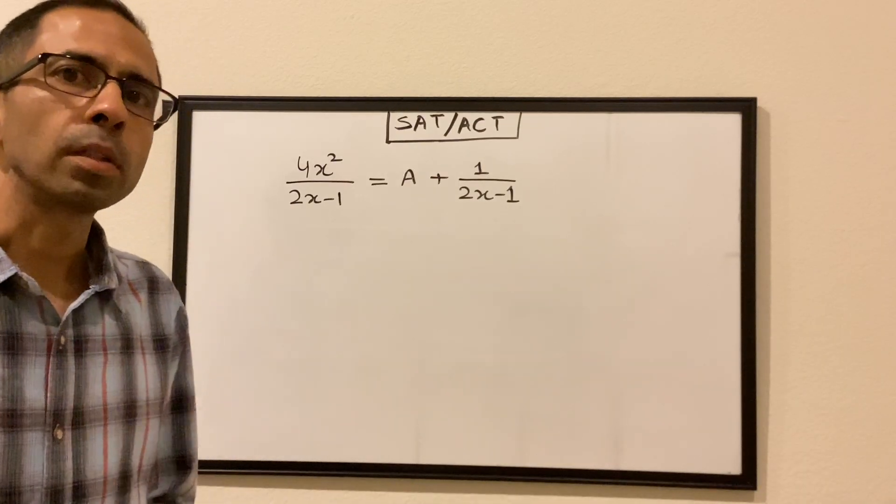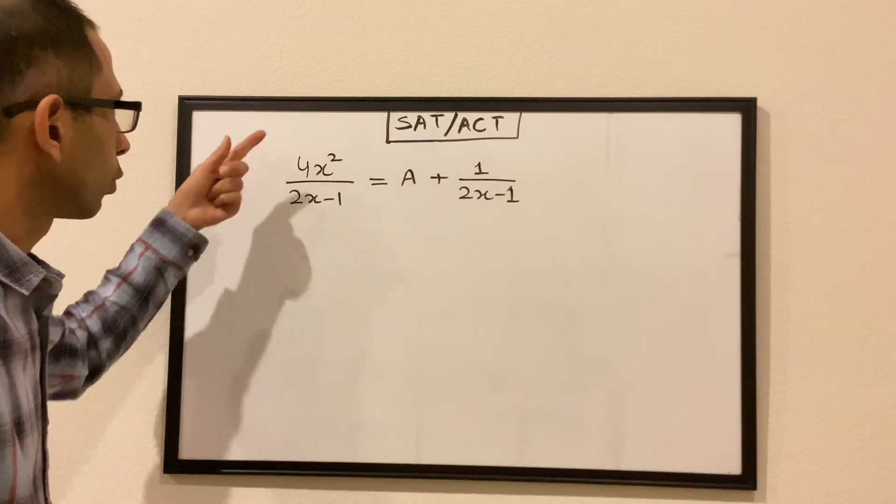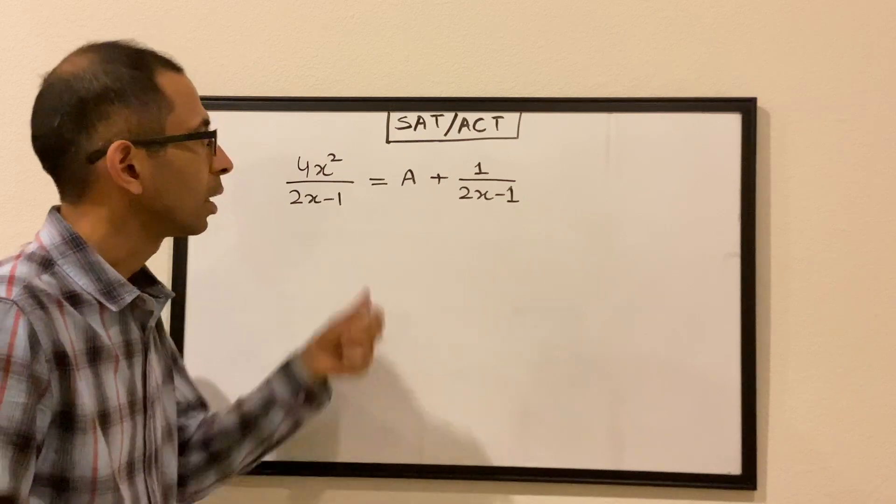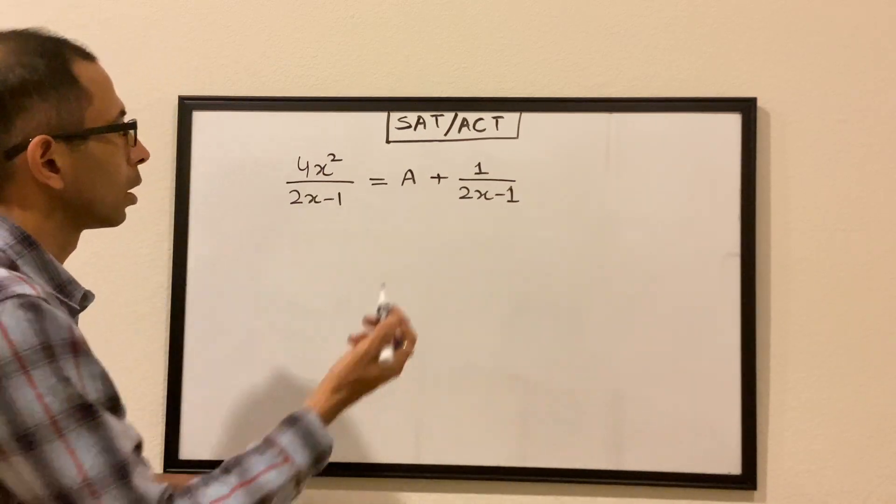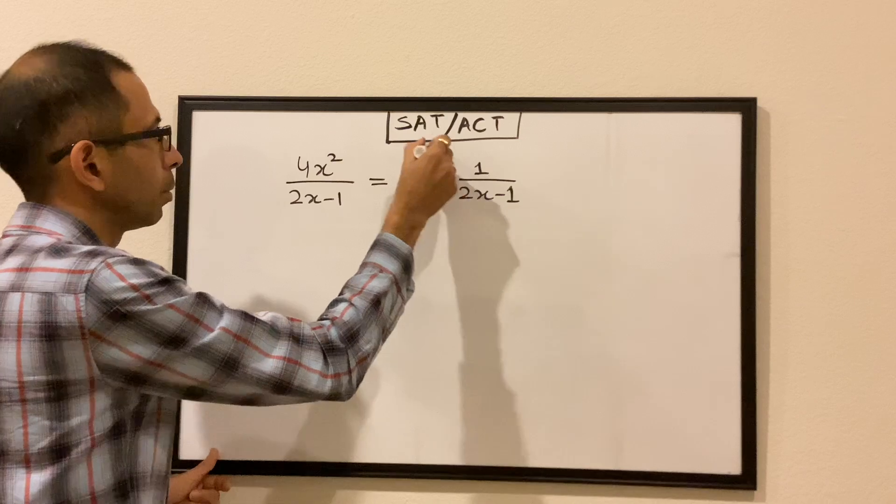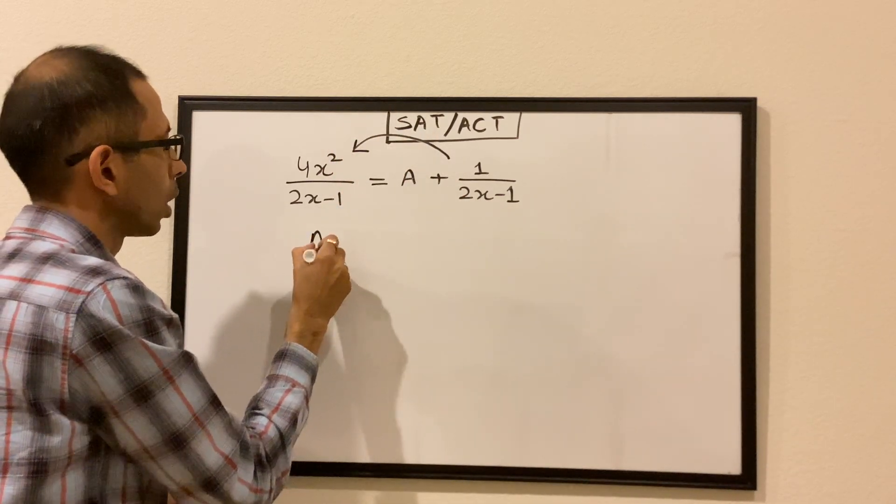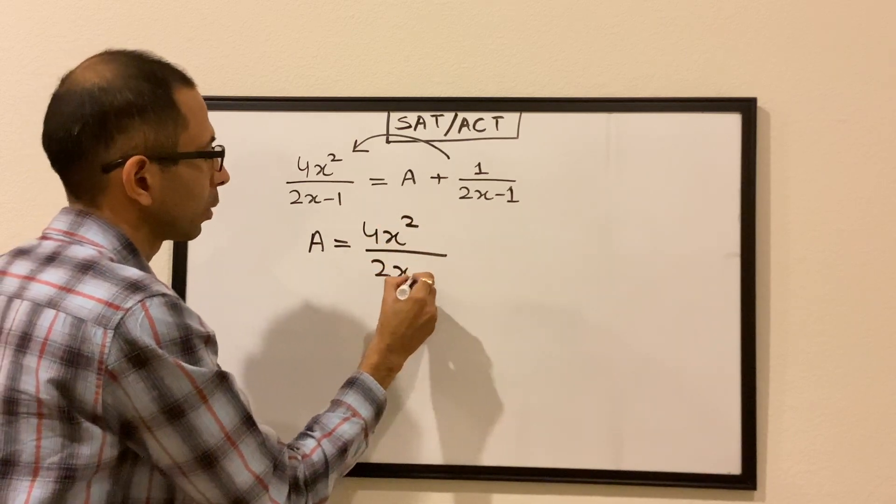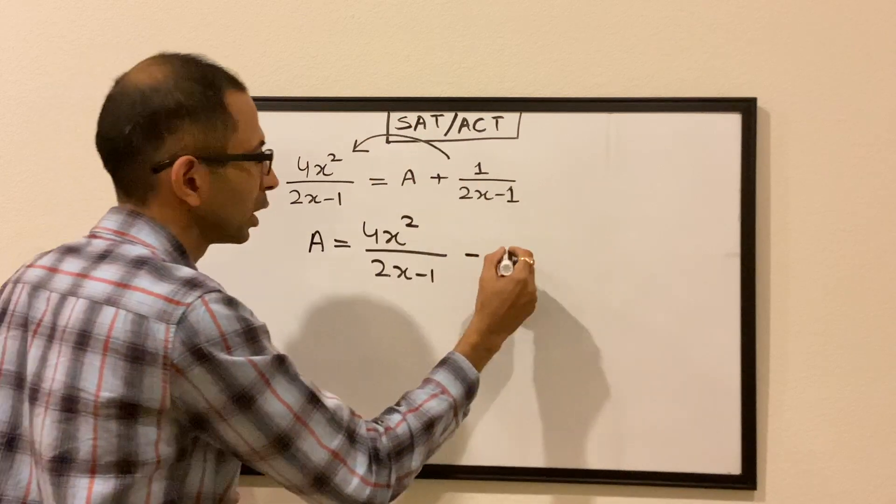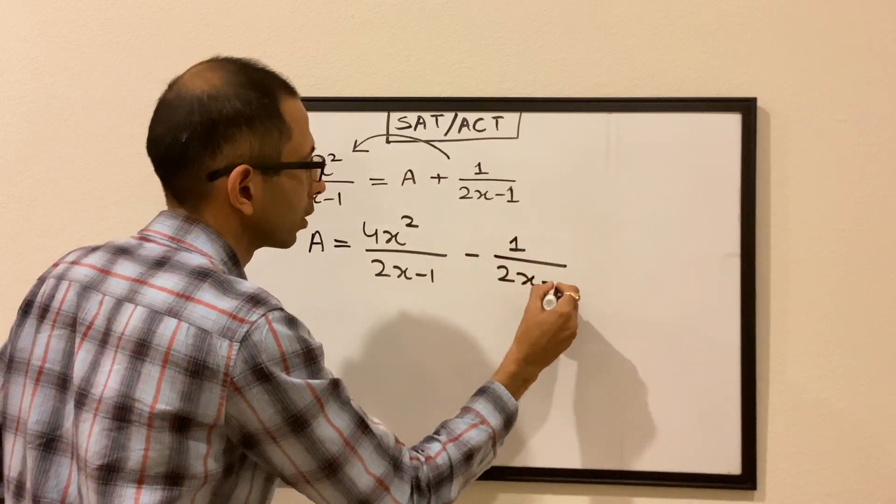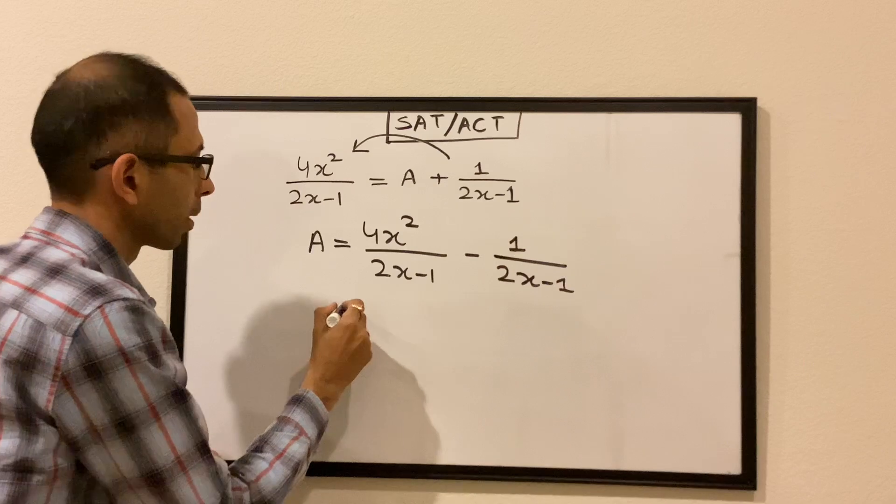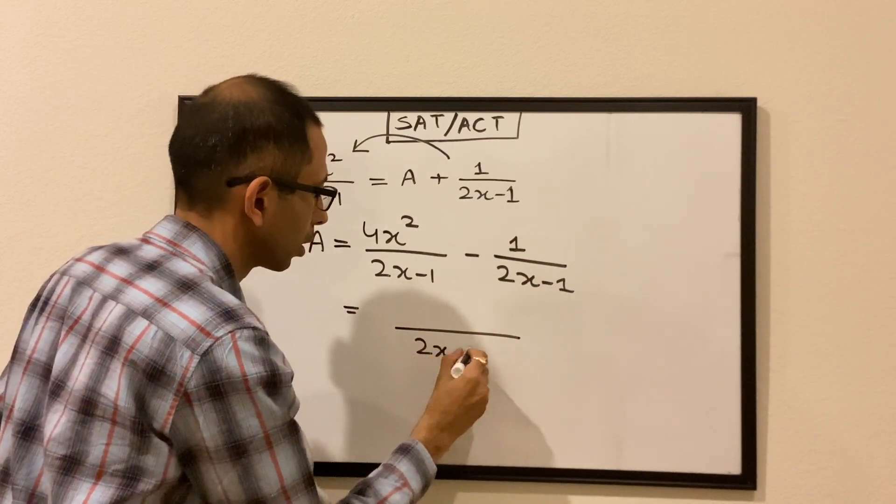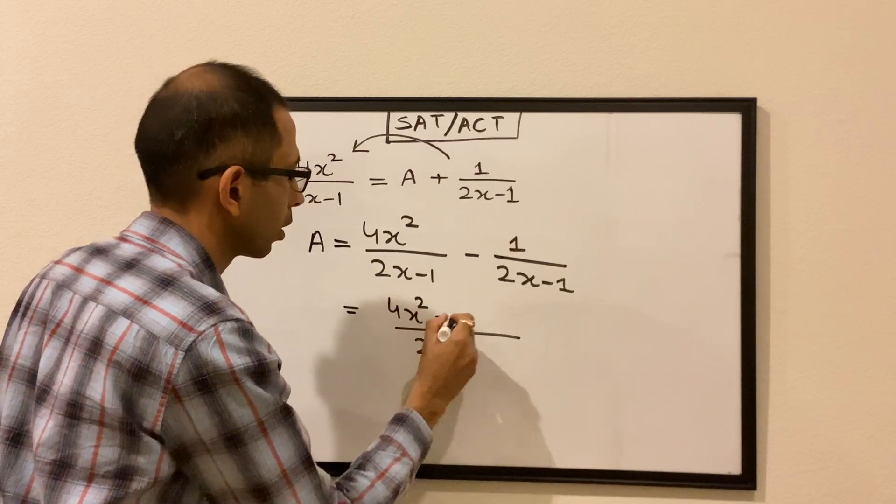Let's take another example in terms of solving a quadratic equation. We have equation 4x square divided by (2x minus 1) is equal to a plus 1 over (2x minus 1), and we have to find the value of a. So in the first step obviously we bring this guy to the left side, so our a becomes 4x square divided by (2x minus 1) minus 1 because we are moving it to the left side. The denominators are the same, so it's a little easier for us. So 4x square minus 1 divided by (2x minus 1).